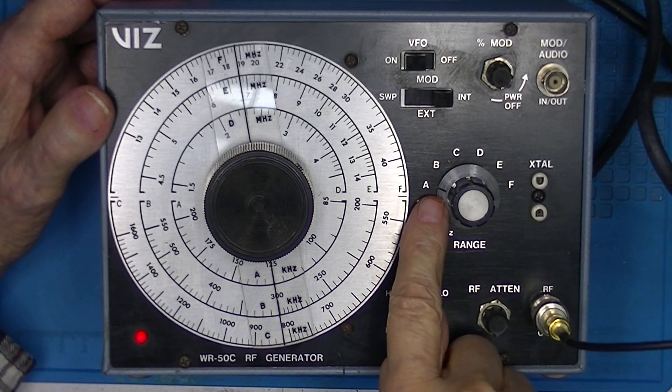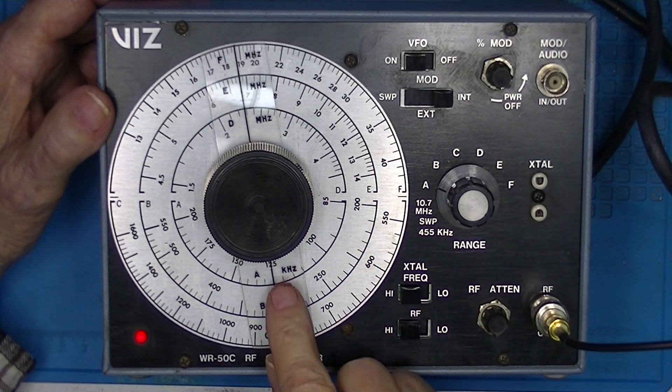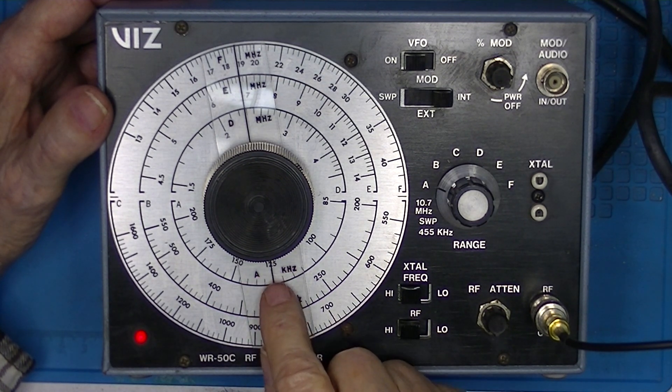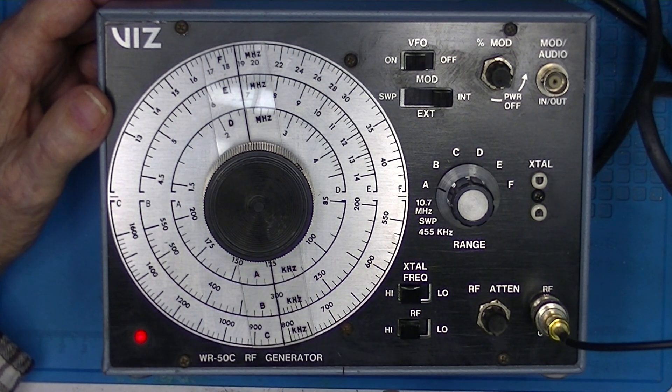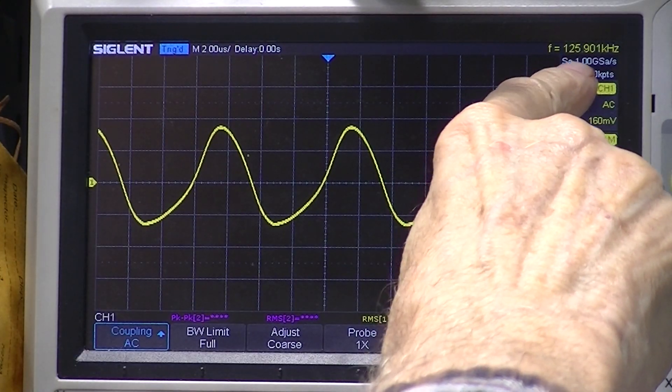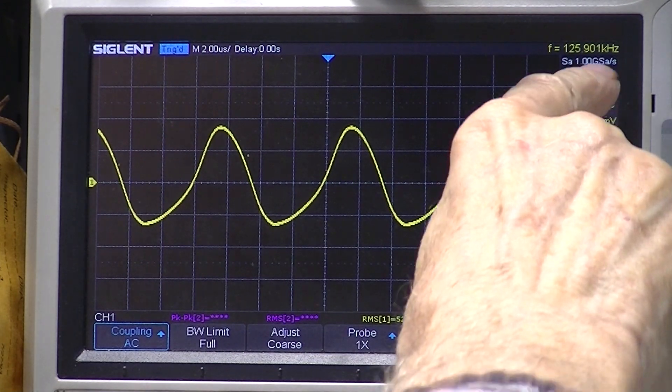I'm on band A. I've set it at 125 kHz. Look at the oscilloscope. It's 125.9 kHz on the frequency meter.